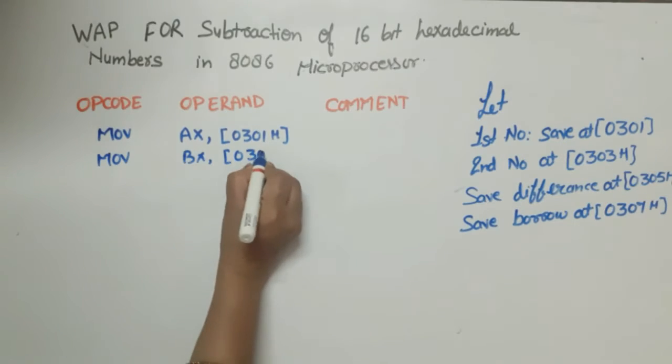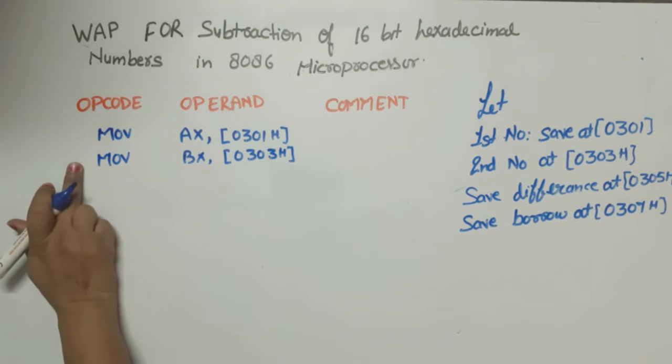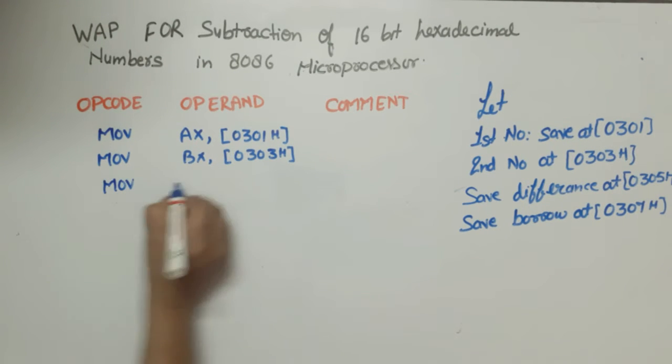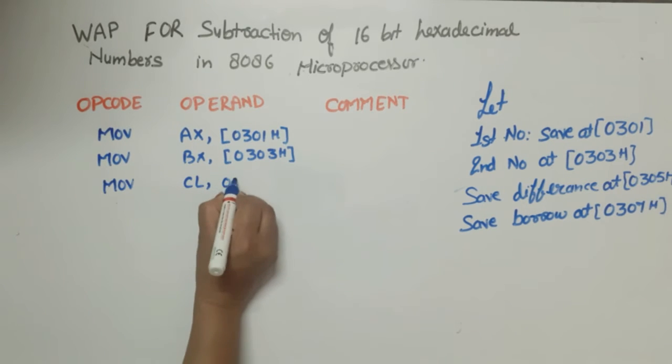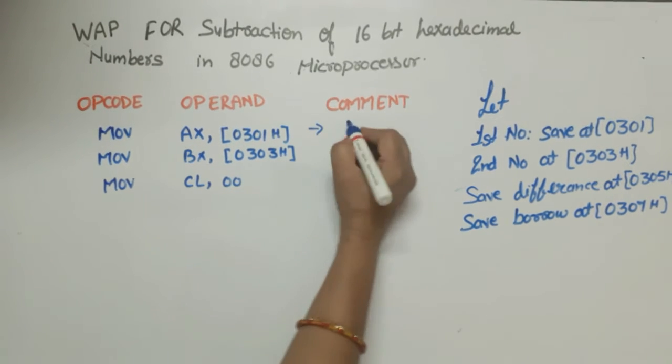Now we have to move second number, move BX, 0303h. So this is the first number, second number. Borrow means that we need a borrow register, move CL, 00. Now I am explaining it, if this line is executed then what will happen?